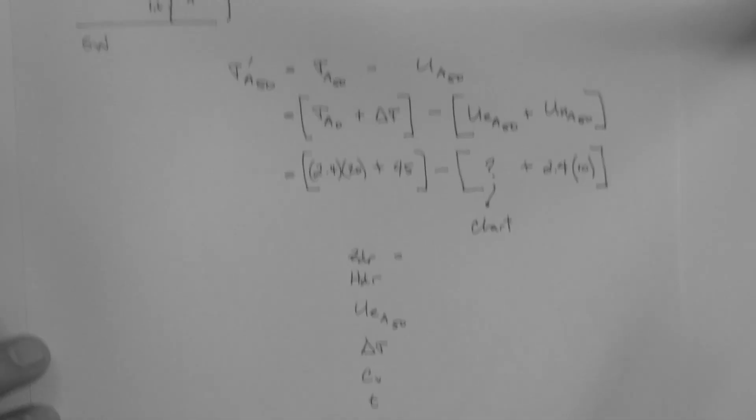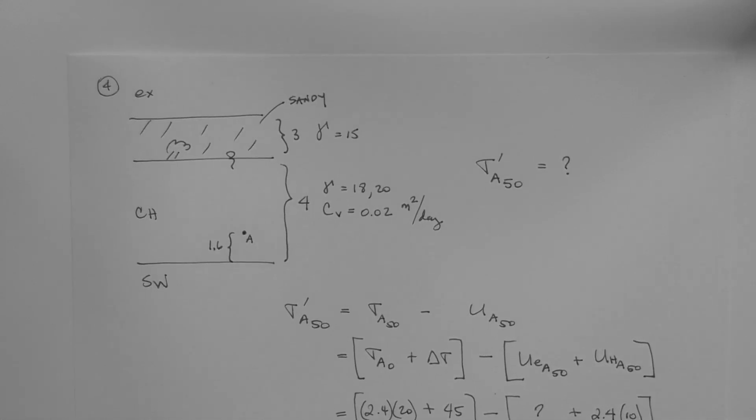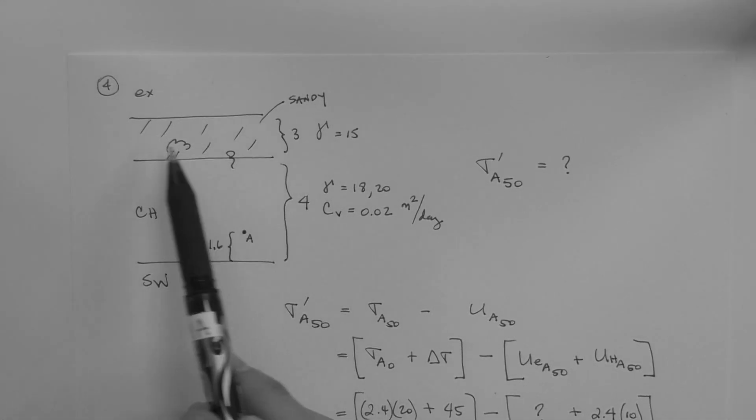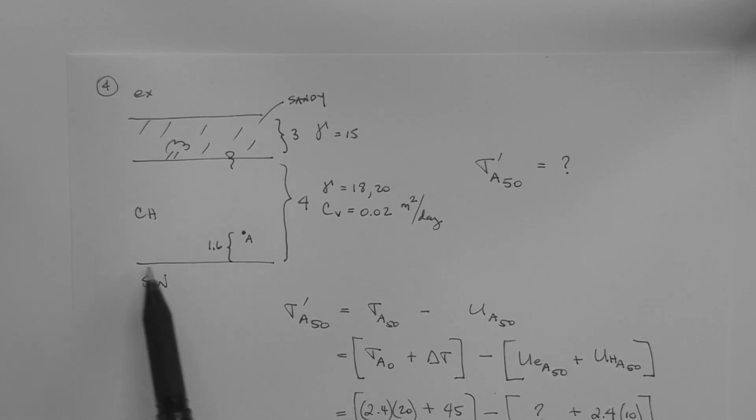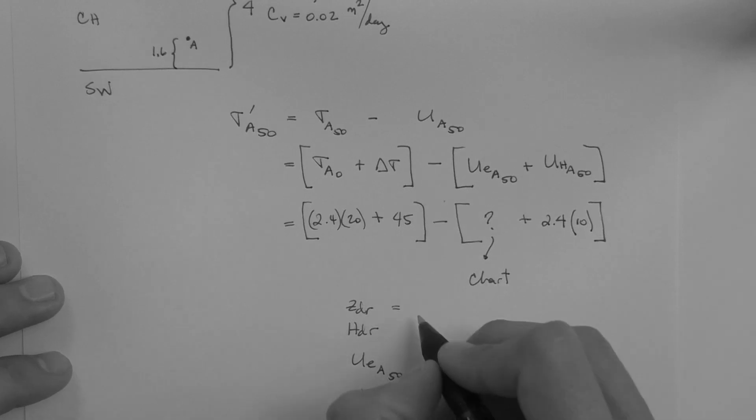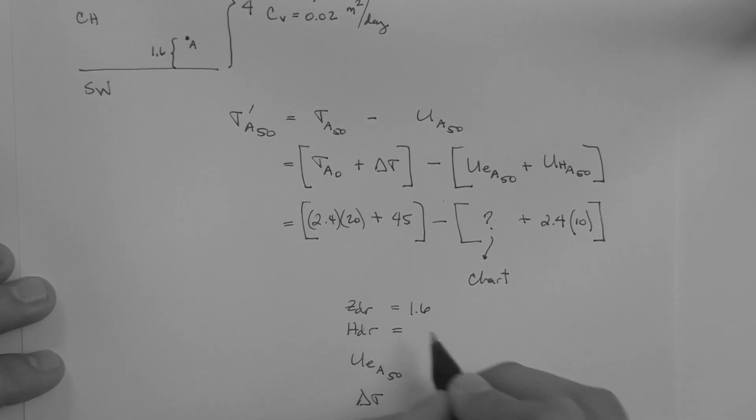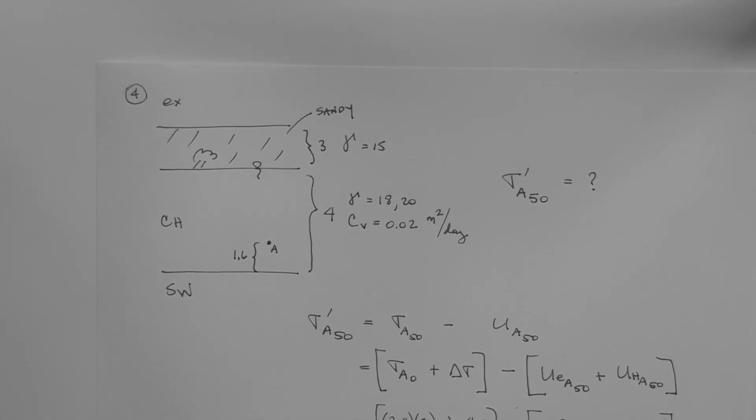ZDR, the distance from the point to the nearest drainage boundary. If this is a sandy fill, this is a drainage boundary, and this is sand, so this is also a drainage boundary. The nearest one to point A is this one down here, which is 1.6 meters away. So ZDR is 1.6 meters.